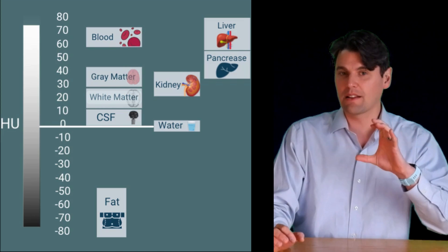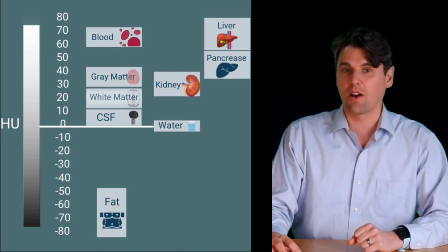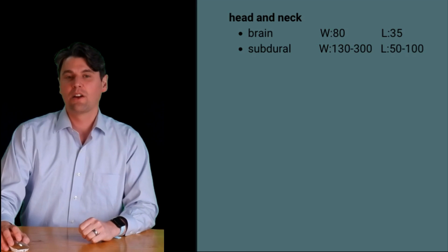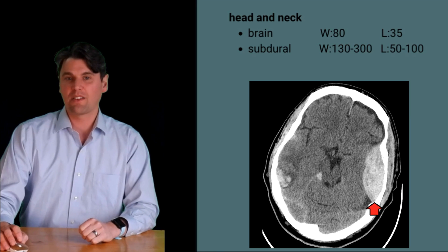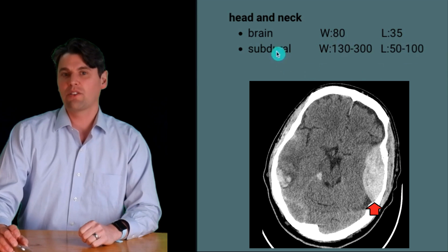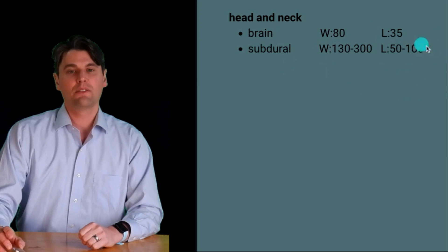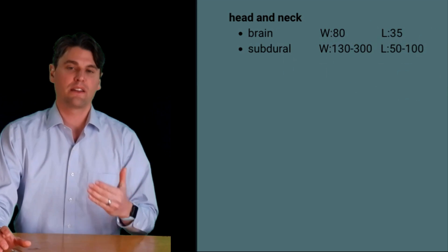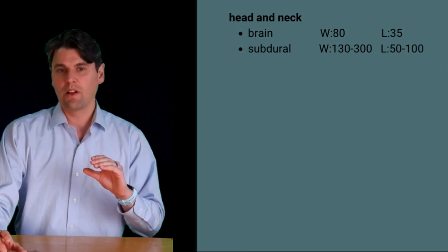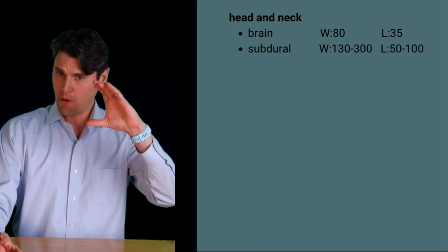You need a special window for imaging blood in the brain, especially if it's along the bone interface or right next to the calvarium, because you wouldn't want to confuse blood and bone when both are saturating out. This is called the subdural window — you make the window width wider and the window level higher in comparison with your standard brain image, so you can see blood next to the calvarium.